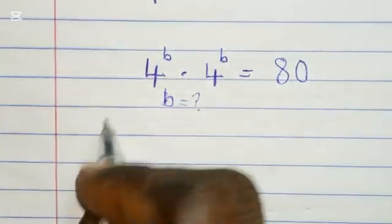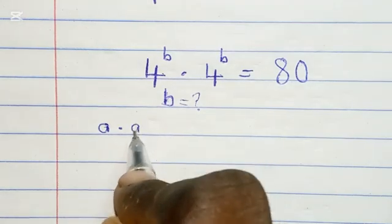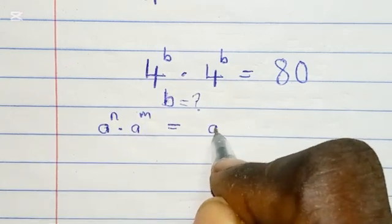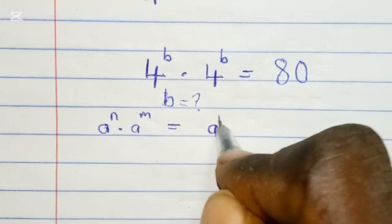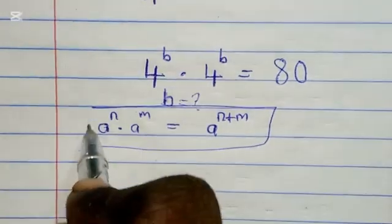Recall that when you are multiplying two numbers with the same base in indices, you are going to add up the powers. You bring out the base and add up the powers. So now recalling this property of indices...